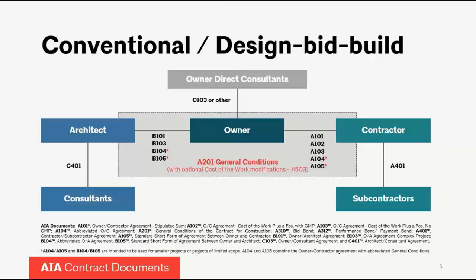That's the relationship in the conventional design-bid-build delivery model. For those not familiar with AIA documents, the C-103 refers to an owner-consultant agreement. The B-101 and B-103 are our conventional owner-architect agreements, and so forth. Those numbers and letters all represent various types of agreements that solidify or create contracts for those relationships — owner-architect, owner-contractor, and contractor-subcontractor, which would be the A-401.